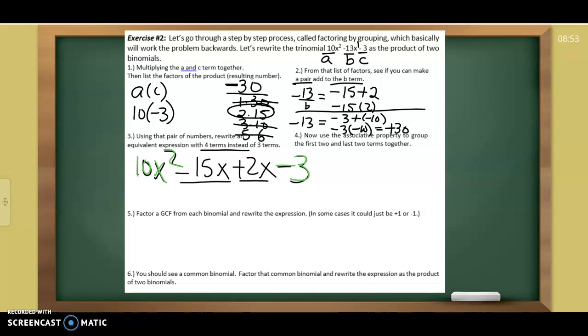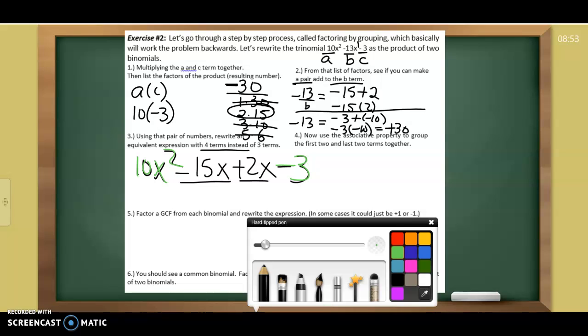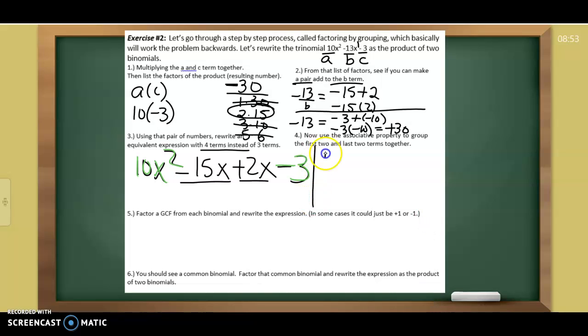Now we're going to use the associative property to group the first two and the last two terms together. And 10x squared minus 15x is going to go together. We're going to put the first two terms together. We are only adding. So do not think of this as multiplying yet. Then 2x minus 3 is going to go together. So we kind of group those things. And we can do that because parentheses tell us what to do first. But we can't. We cannot subtract unlike terms. So we move on.